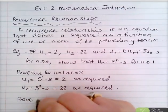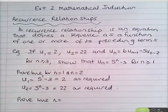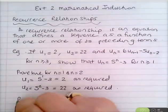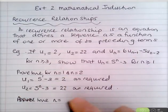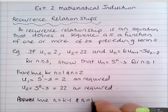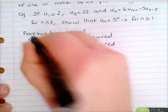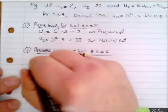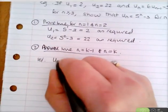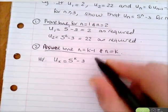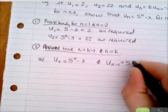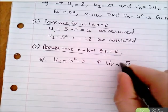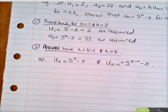For Step 2, we need to assume true not only for n = k but also for n = k − 1, since we proved true for both n = 1 and n = 2. So we assume u_k = 5^k − 3 and u_{k−1} = 5^{k−1} − 3.